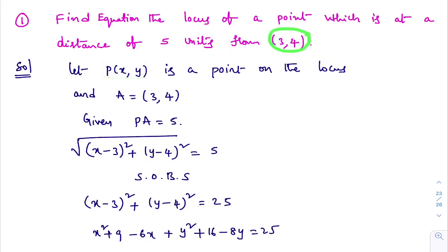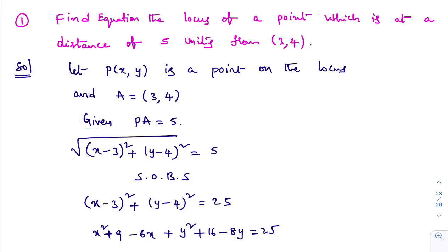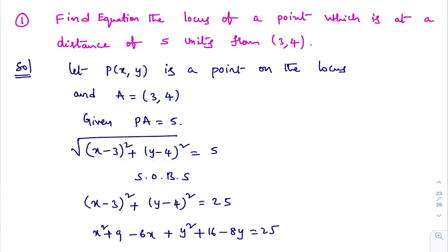Here the given point is A = (3, 4). The condition is: the point is at a distance of 5 units from (3, 4), so PA = 5. Using the distance formula, square root of (x − 3)² + (y − 4)² = 5. Squaring both sides: (x − 3)² + (y − 4)² = 25.